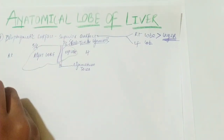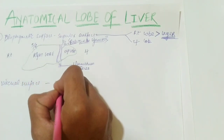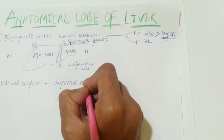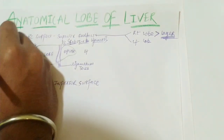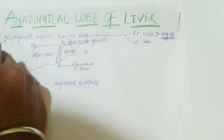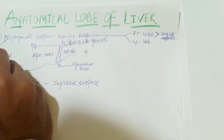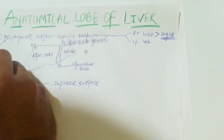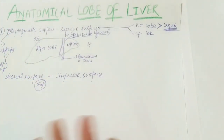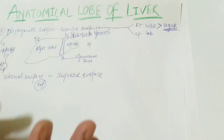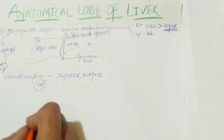On the superior surface you can see only two lobes: the right and the left lobe. Now let's look at the visceral surface, also called the inferior surface. Regarding the surfaces overall, if we consider the liver has five surfaces, four of these surfaces are included in the diaphragmatic part — that is the anterior surface, the posterior surface, the right lateral surface, and the superior surface — and one surface is the visceral or inferior surface.